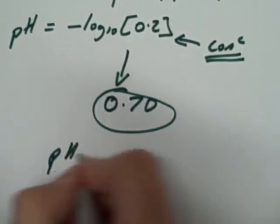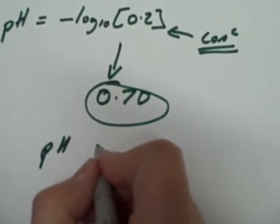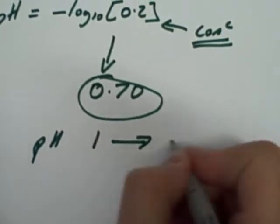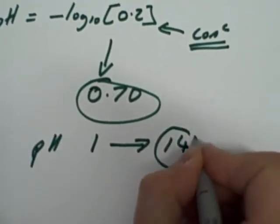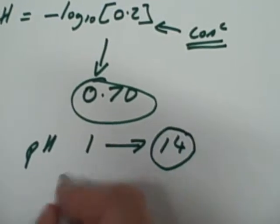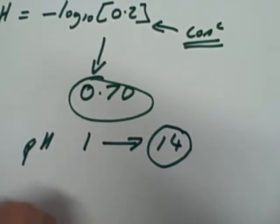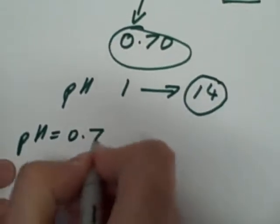Now, hopefully, from the lectures, we're all comfortable, once again, that pH runs all things being equal between 1 and 14. So, effectively, everything's got to add up to 14. So, if the pH is 0.7, what will the pOH be?